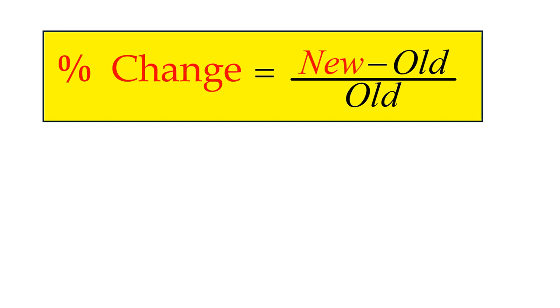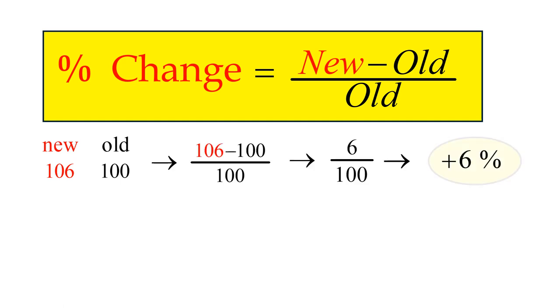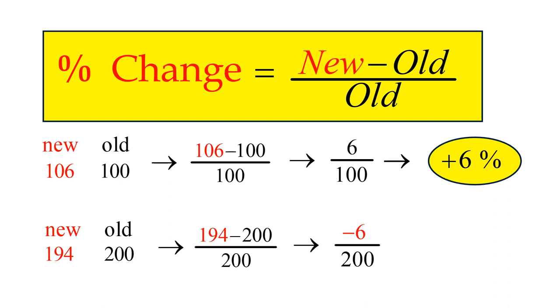In our first example, the new value is 6 more than the old value. The ratio 6 over 100, 6%. What if the new value is less than the old value? The difference here is negative 6 divided by 200, the percentage change, negative 3%.